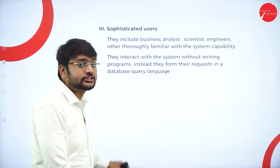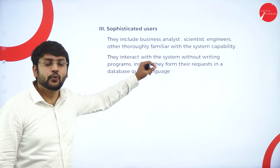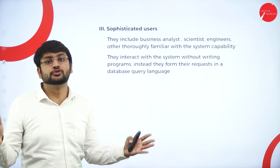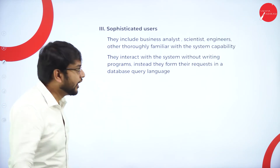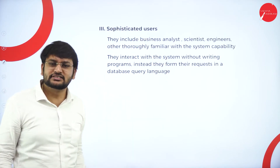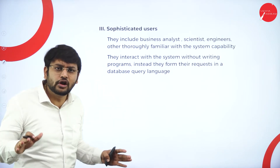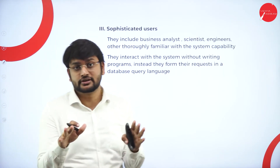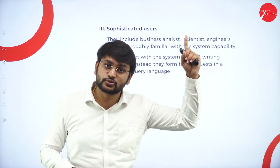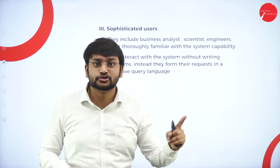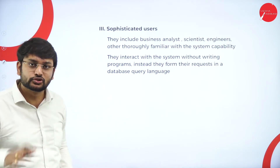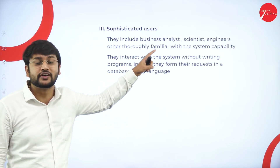The next type is the sophisticated end user. When it comes to sophisticated users, they have complete knowledge about the system and how to use it. Who are they? Business analysts, scientists, and engineers. They have a very good understanding of the system. Compared to casual and parametric users, sophisticated users have complete knowledge about the system — that is what you need to remember.